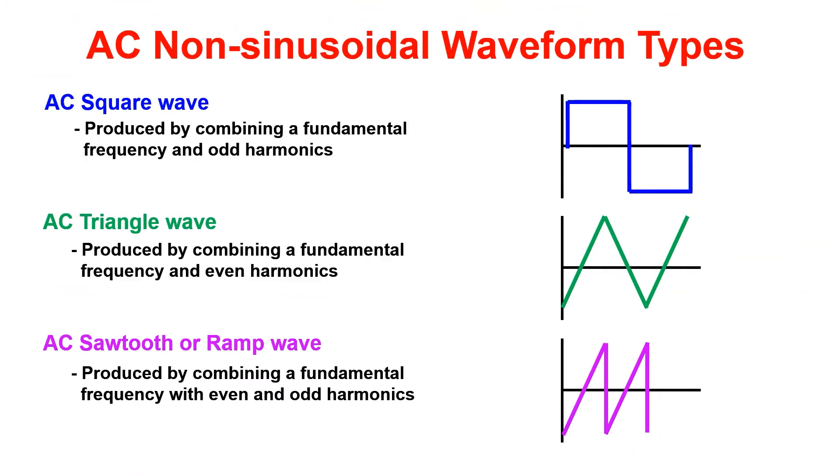As you learned from lecture today, there are many different wave types that can be generated. Let's take a look at a few. AC square waves are produced by combining a fundamental frequency and odd harmonics and can be identified by their instantaneous rise or fall. Triangle waves are produced by combining a fundamental frequency and even harmonics. These are identified by a linear rise and fall of the waveform. AC sawtooth or ramp waveforms are produced when combining a fundamental frequency with even and odd harmonics, and can be identified by a linear rise and instantaneous fall.